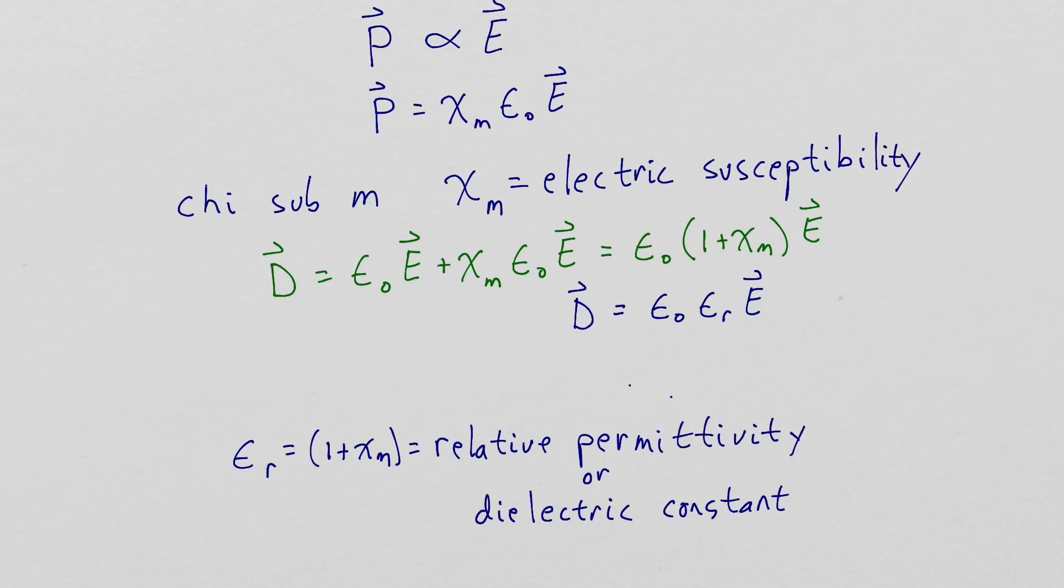This product of the permittivity of free space times the dielectric constant is sometimes rewritten as just epsilon. Epsilon is referred to as the absolute permittivity.